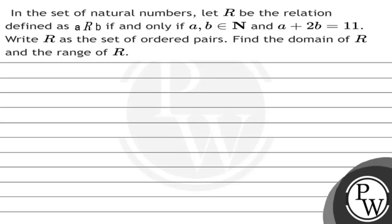Hello everyone, let's see the question. In the set of natural numbers, let R be the relation defined as a R b if and only if a, b belongs to N and a plus 2b equals 11. Write R as the set of ordered pairs, find the domain of R and the range of R.